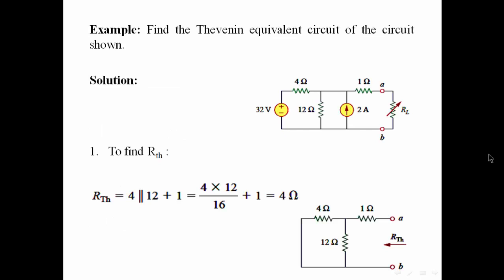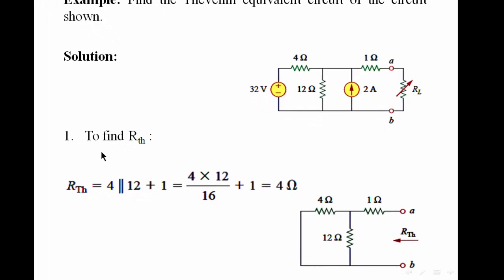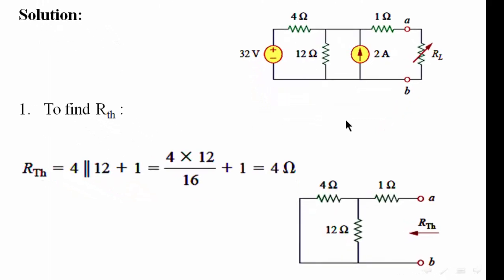Let's solve this example to understand Thevenin's theorem. Find the Thevenin equivalent circuit of the circuit shown. This means that we need to find the equivalent resistance and the equivalent voltage. To find the Thevenin's equivalent resistance, we need to remove the load, R-load.